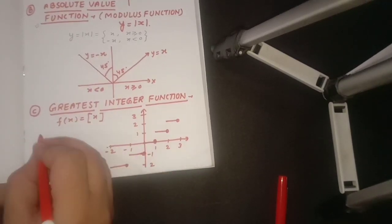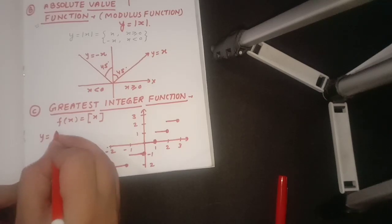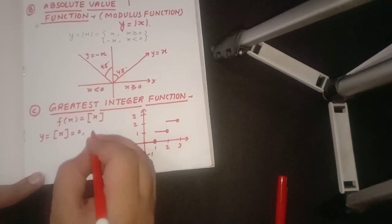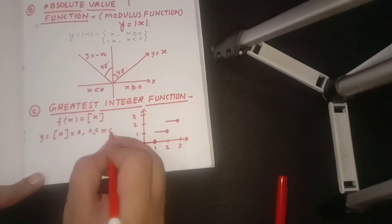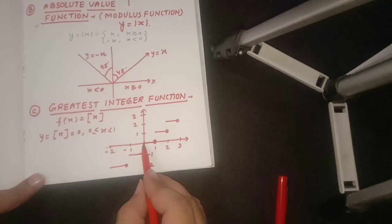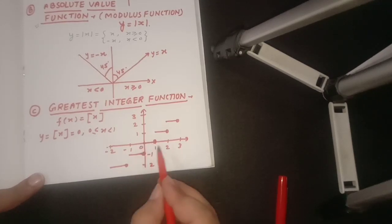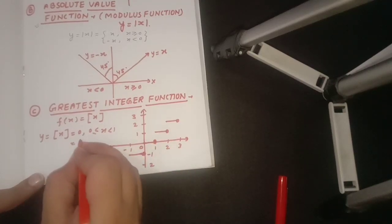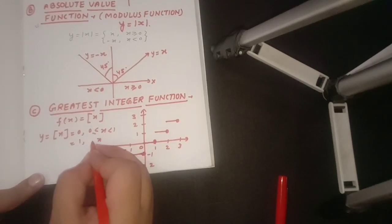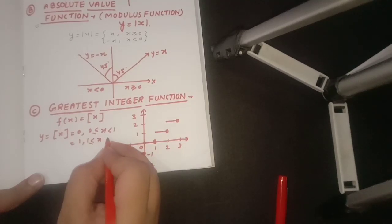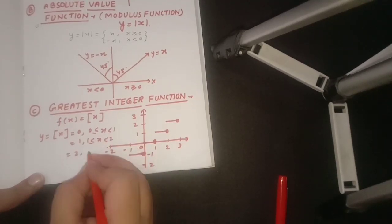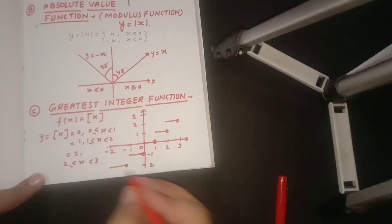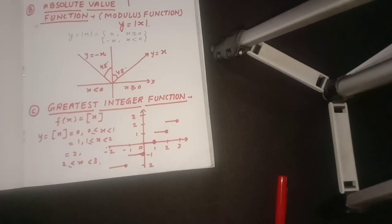Looking at the generalized definition: f(x) = 0 when x lies between 0 and 1, it equals 1 when x lies between 1 and 2, it is 2 when x lies between 2 and 3, and so on. This is the greatest integer function.